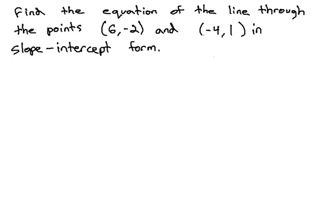In this problem, we are asked to find the equation of a line through the points (6, -2) and (-4, 1) in slope-intercept form.